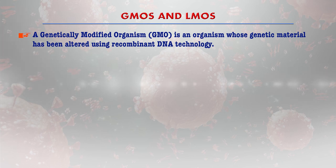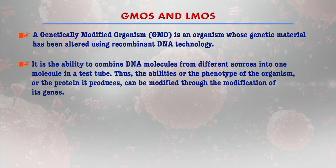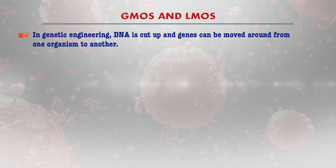GMO refers to a genetically modified organism — an organism whose genetic material has been altered using recombinant DNA technology. It is the ability to combine DNA molecules from different sources into one molecule in a test tube, so the abilities, phenotype, or proteins the organism induces can all be modified through gene modification. For example, hair color, hair texture, eye iris color, and skin color all come from genes; if these genes are altered, different phenotypic or morphological changes occur, and even the proteins produced can be modified.